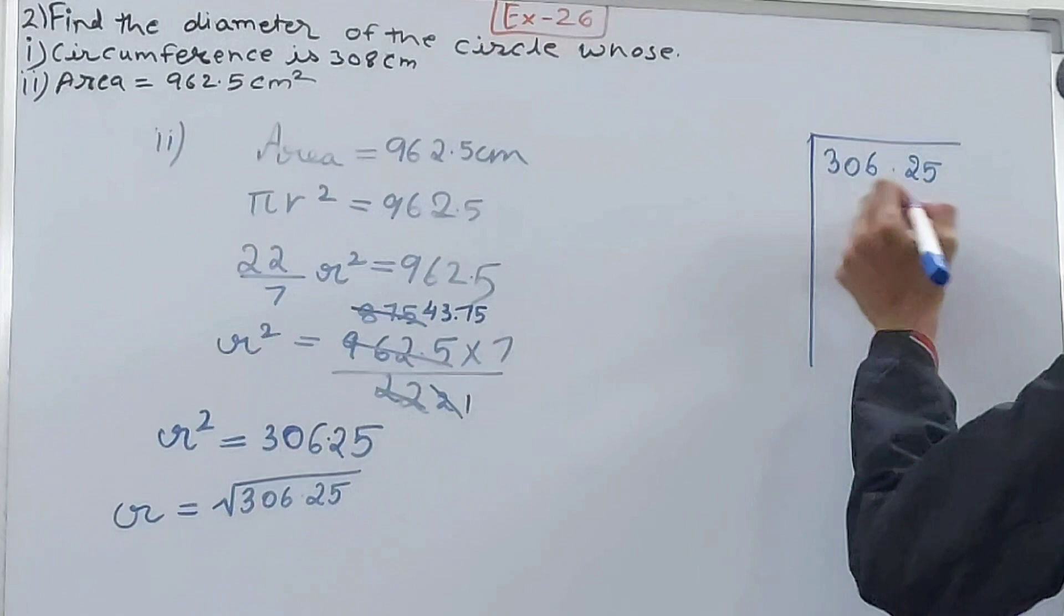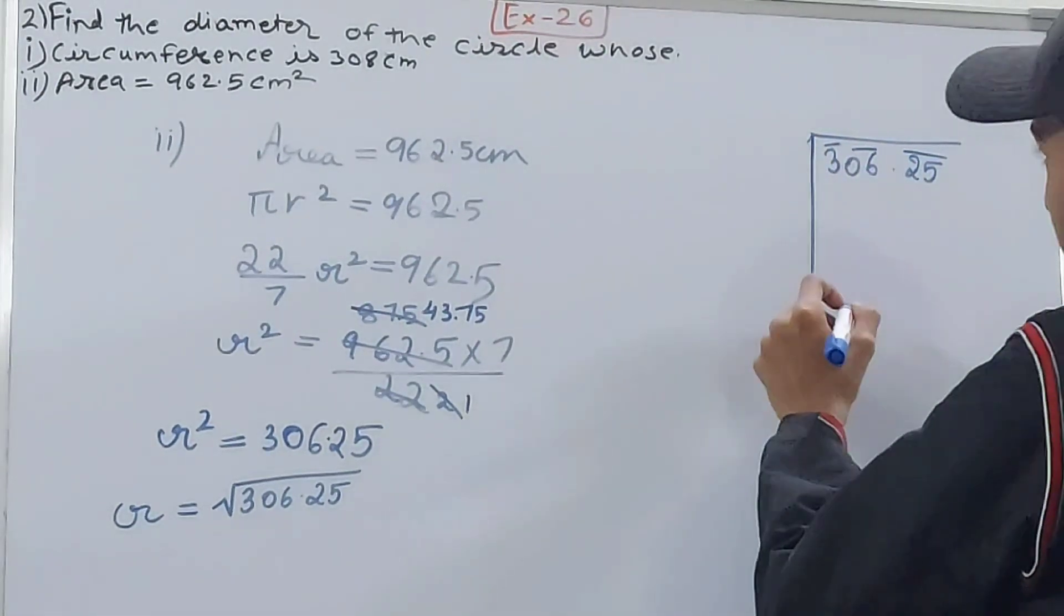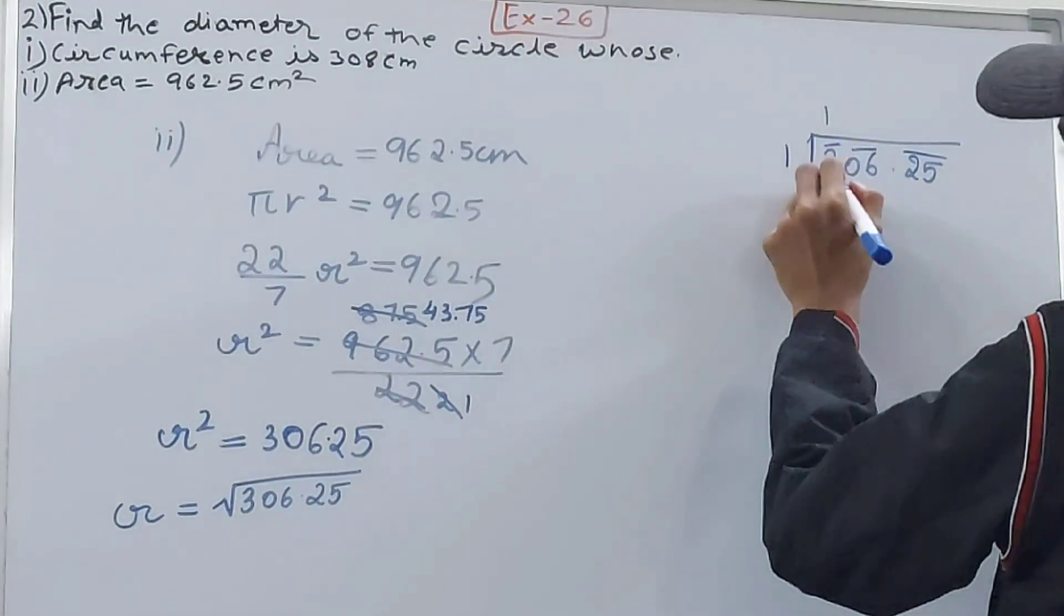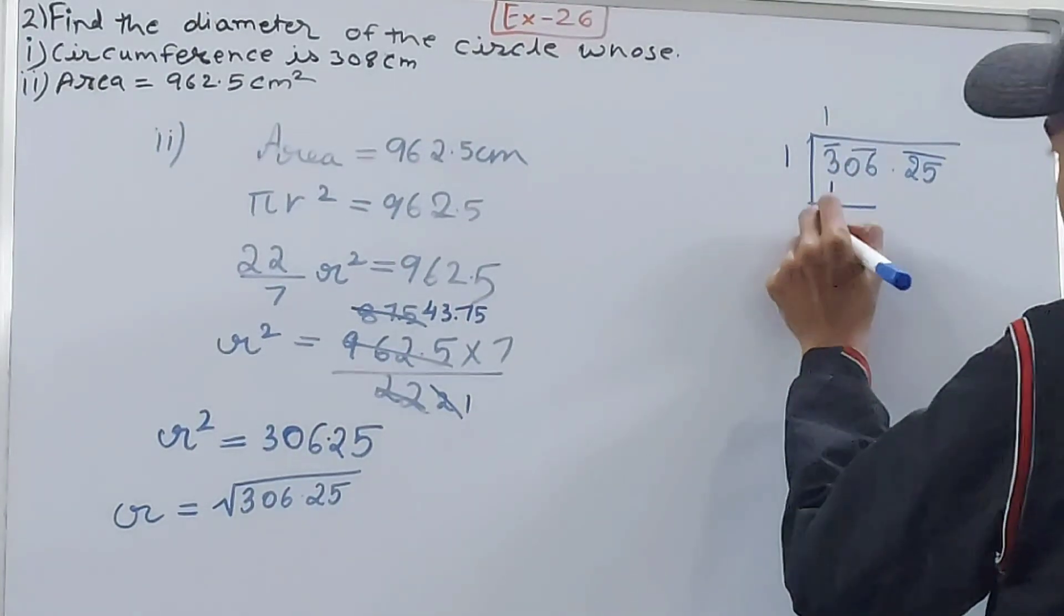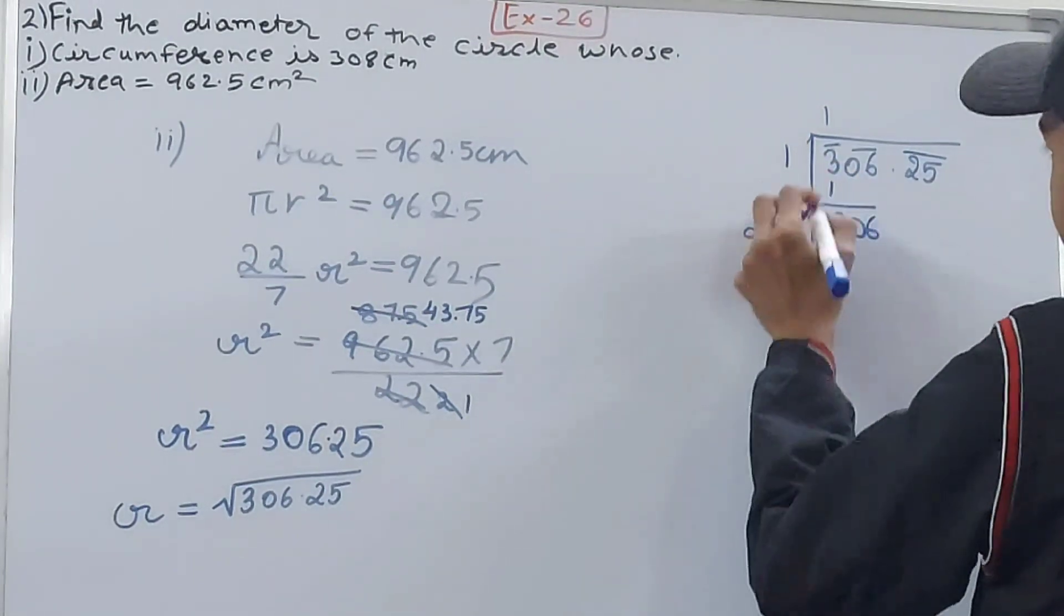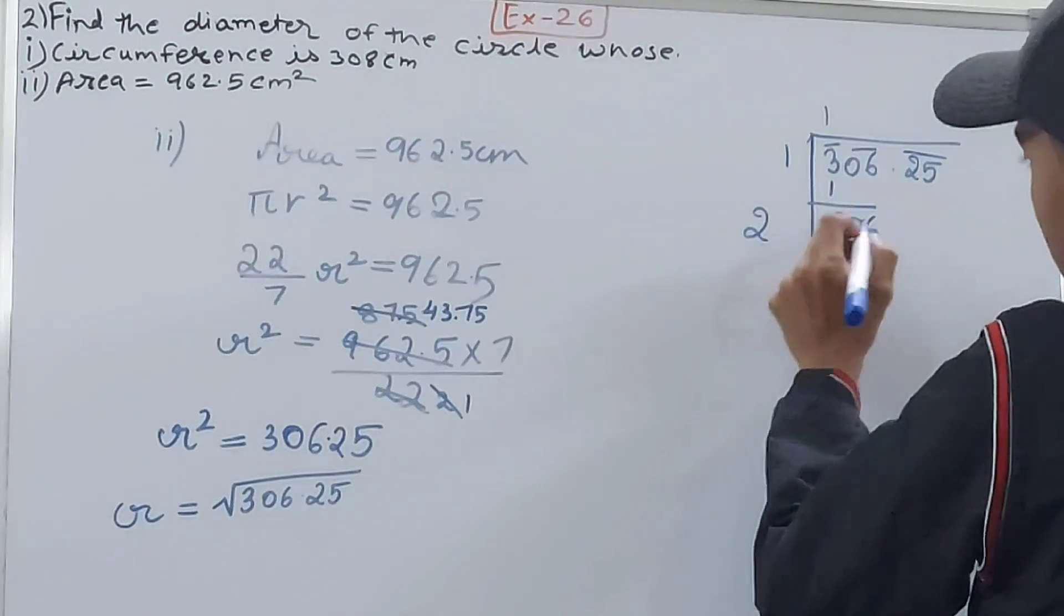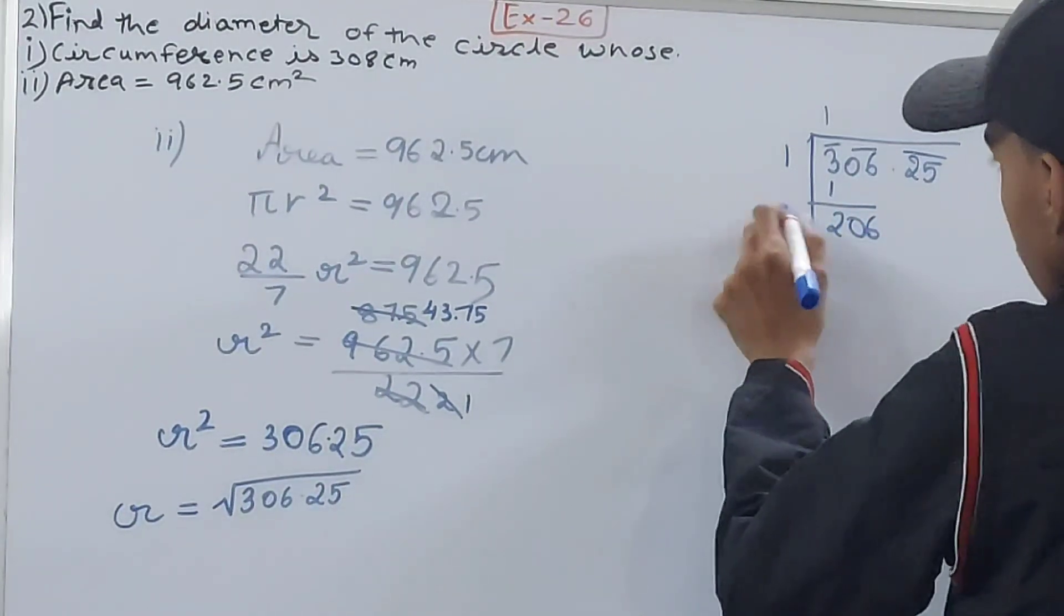So 7 sevens are 49, and 4, 14 and 4, that's 189, that's the nearest one. So 27, 7 here. Minus 189 from this: 16 minus 9 is 7, 9 minus 8 is 1. Now bring down this pair, that's 25.